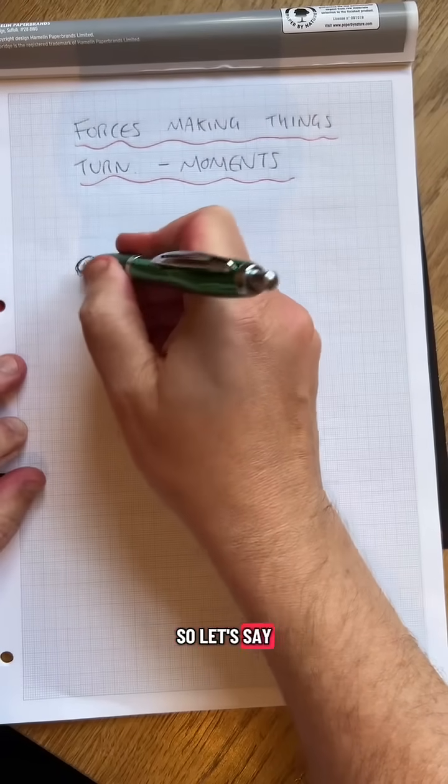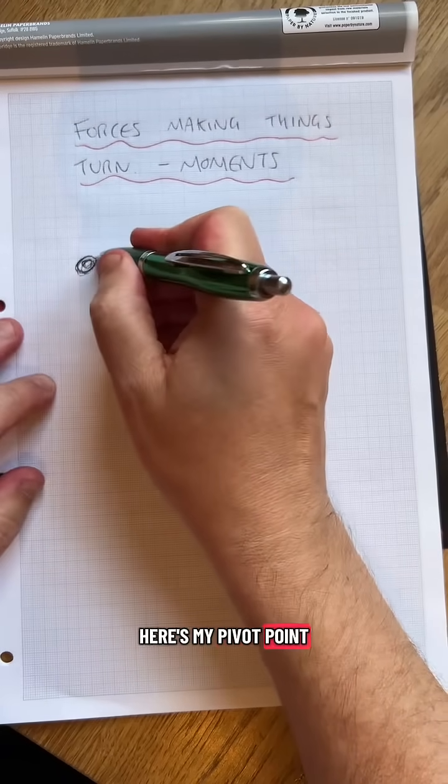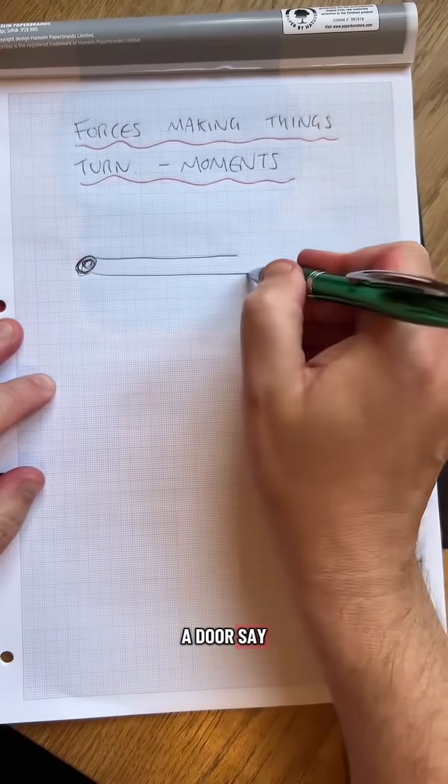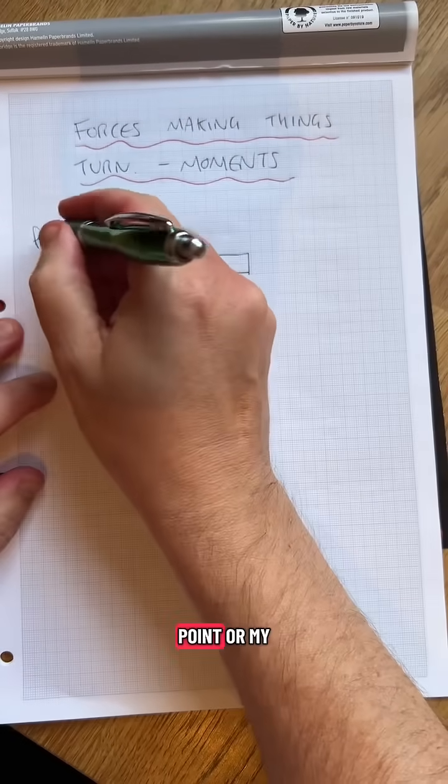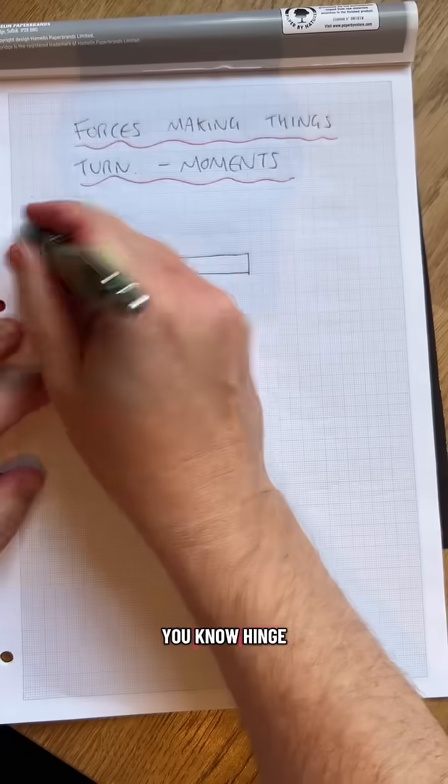So let's say here's my pivot point. There's my, I don't know, a door say looking down. That's my pivot point or my hinge.